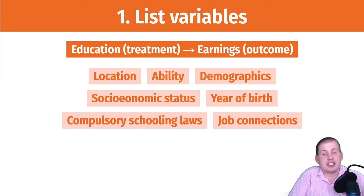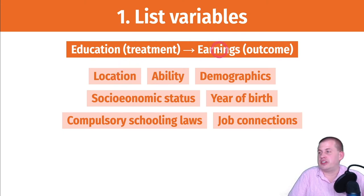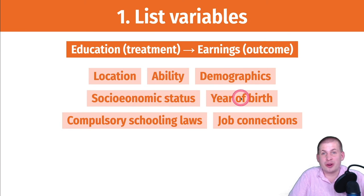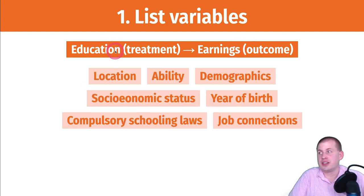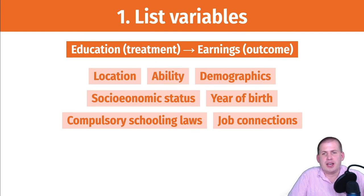For step one, listing things that might cause education or earnings or both: the location where you're born affects what schools you can attend and influences earnings. Your ability to take tests influences both. Demographics, socioeconomic status, and the year you're born all matter — if you're born in a year where 22 years later there's a huge recession, that will hurt your earnings. Compulsory schooling laws cause you to get education. Job connections help with earnings, and education might cause those job connections through networking.